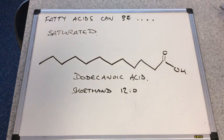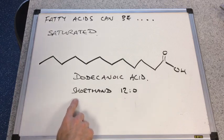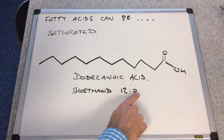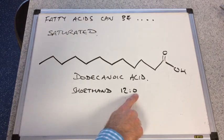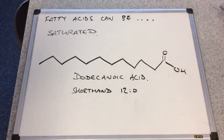So you can see I've written up as well it has a shorthand formula. So the shorthand formula for dodecanoic acid is 12 colon 0. So the 12 obviously refers to the number of carbon atoms in the carbon chain and the 0 refers to the number of double bonds. So obviously because this is a saturated fatty acid it has no double bonds, carbon-carbon double bonds. So therefore we have a 0 there.